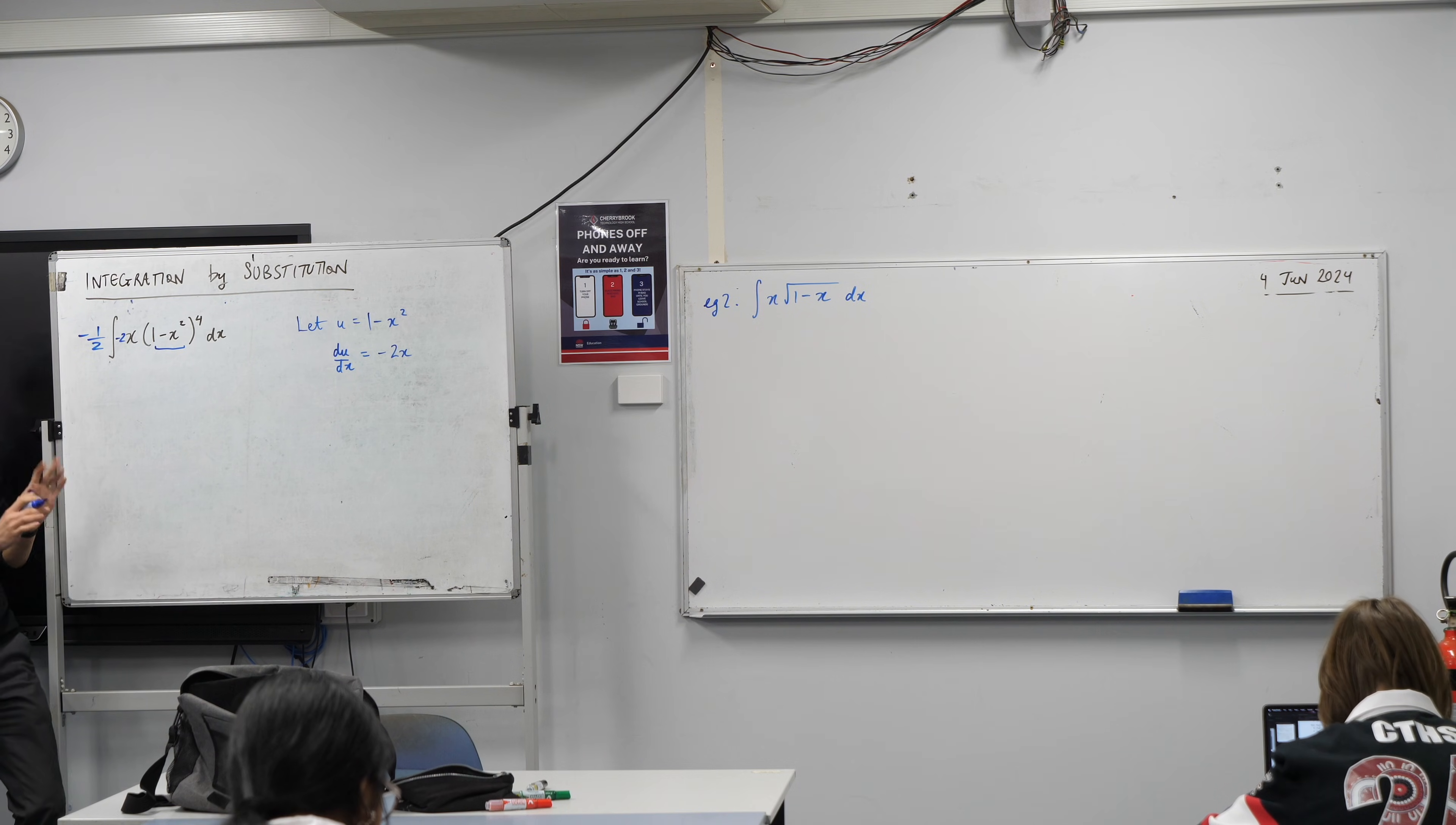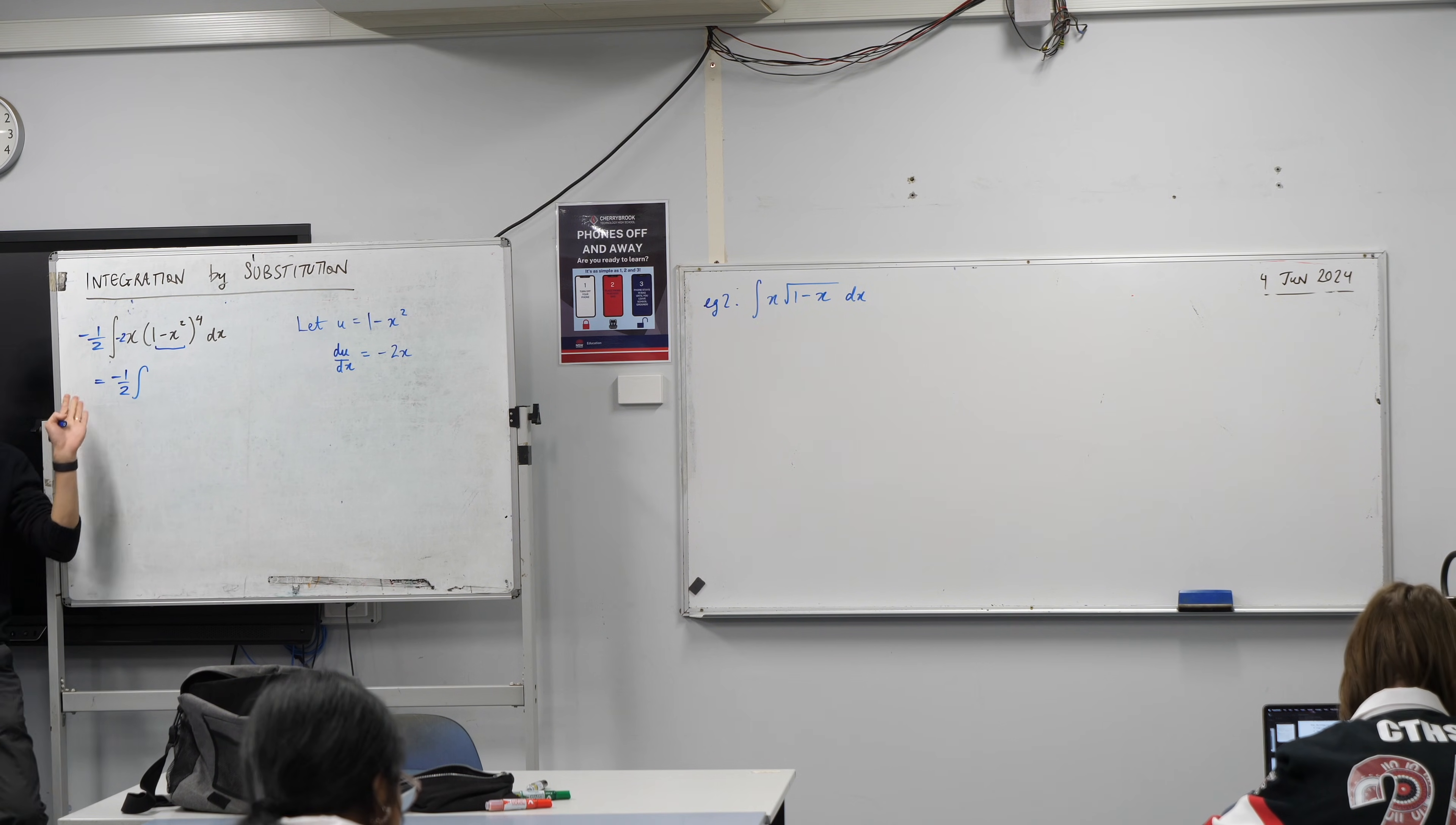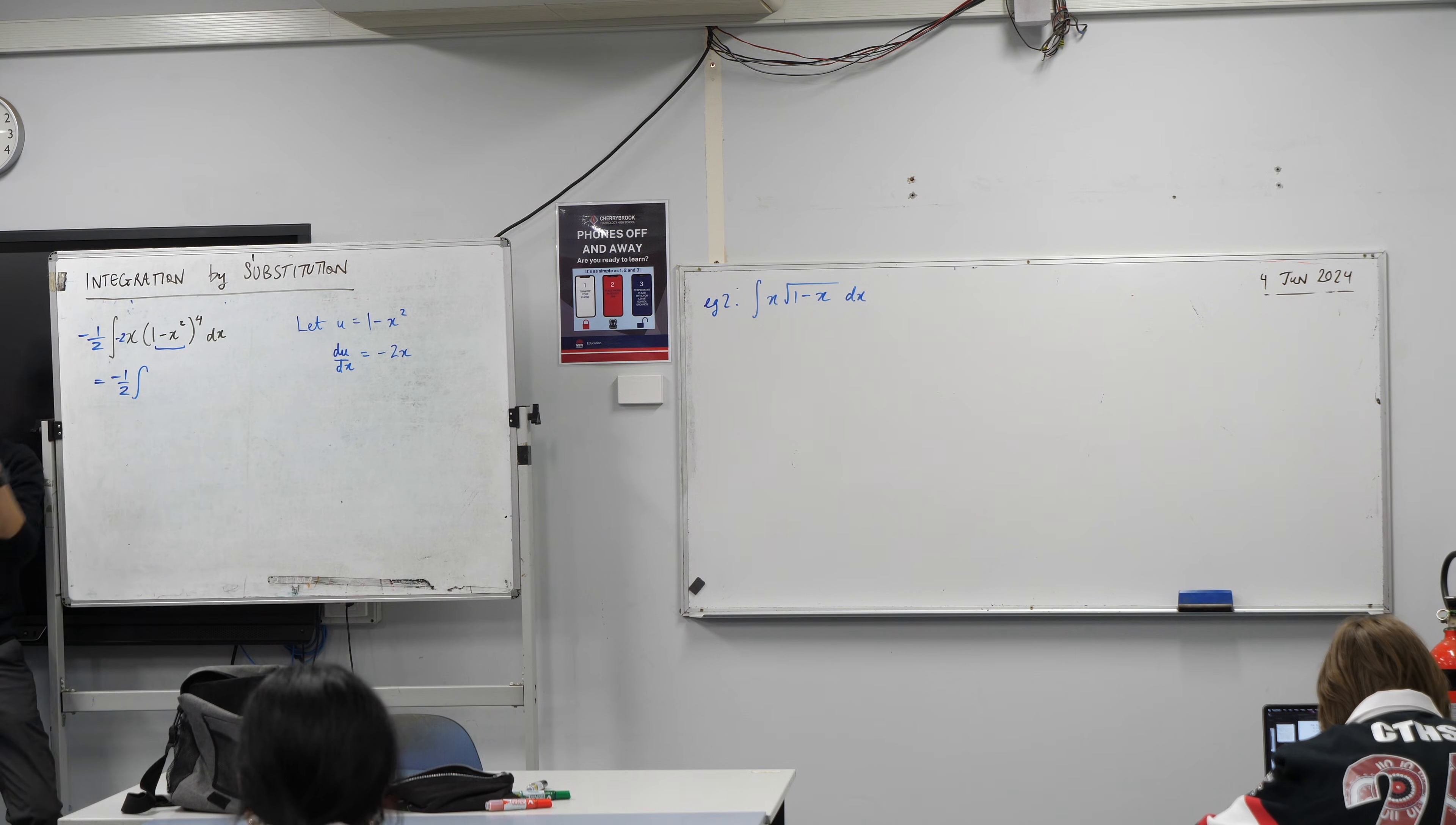So, now, I'm pretty much ready to go, right? I can say, with this negative 1 half out the front, I can turn this whole thing into something with u's rather than with x's.